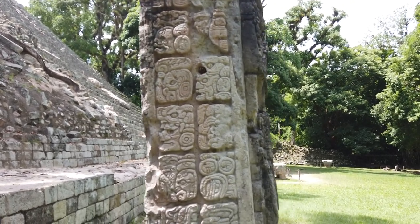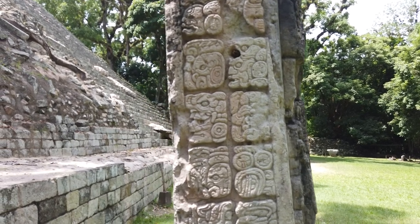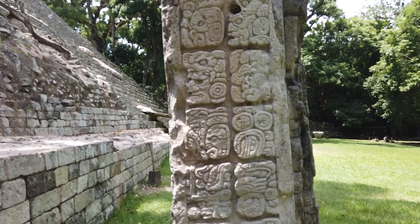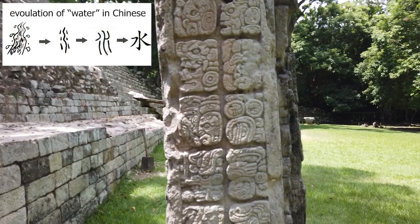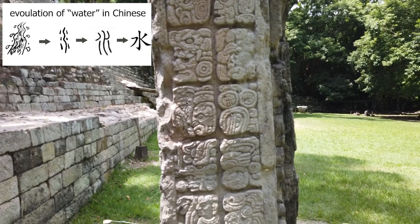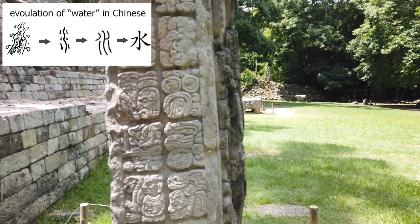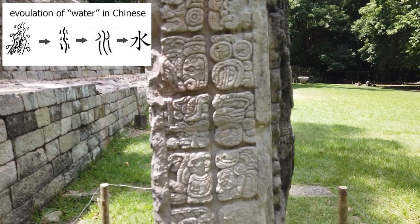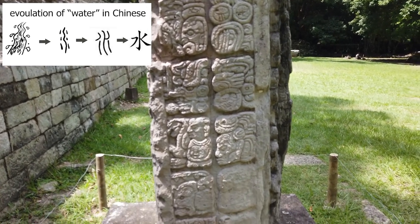What a logogram is, is that the shape itself represents the meaning of the word. So if you look at a word and it looks like a puma, then it is a puma. If it looks like water, then it means water. It has no indication of how it should be pronounced.